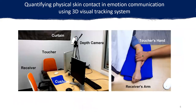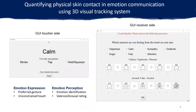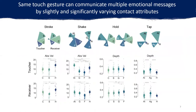In the psychophysical experiments, the toucher was instructed to express emotions by touching the receiver's forearm with preferred gestures. After the touch, the receiver selected a message to identify from the contact and rated the valence and arousal accordingly. Based on experiments, we found that even when the same touch gesture was used, people can still use slightly but significantly varied contact attributes to express totally different emotions.